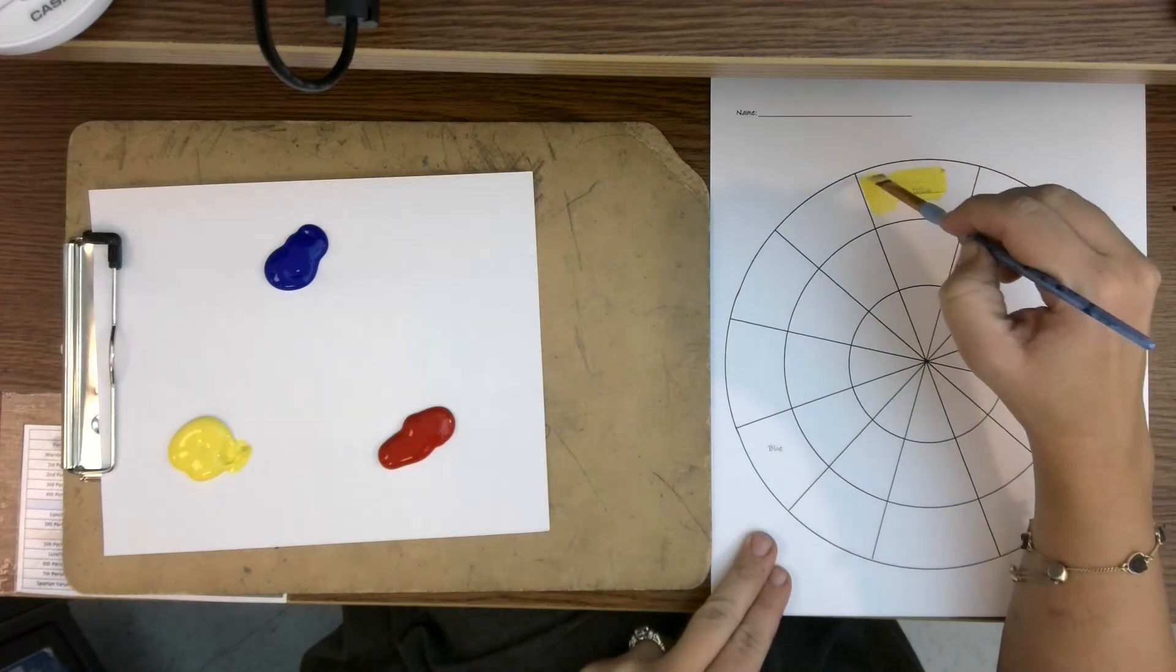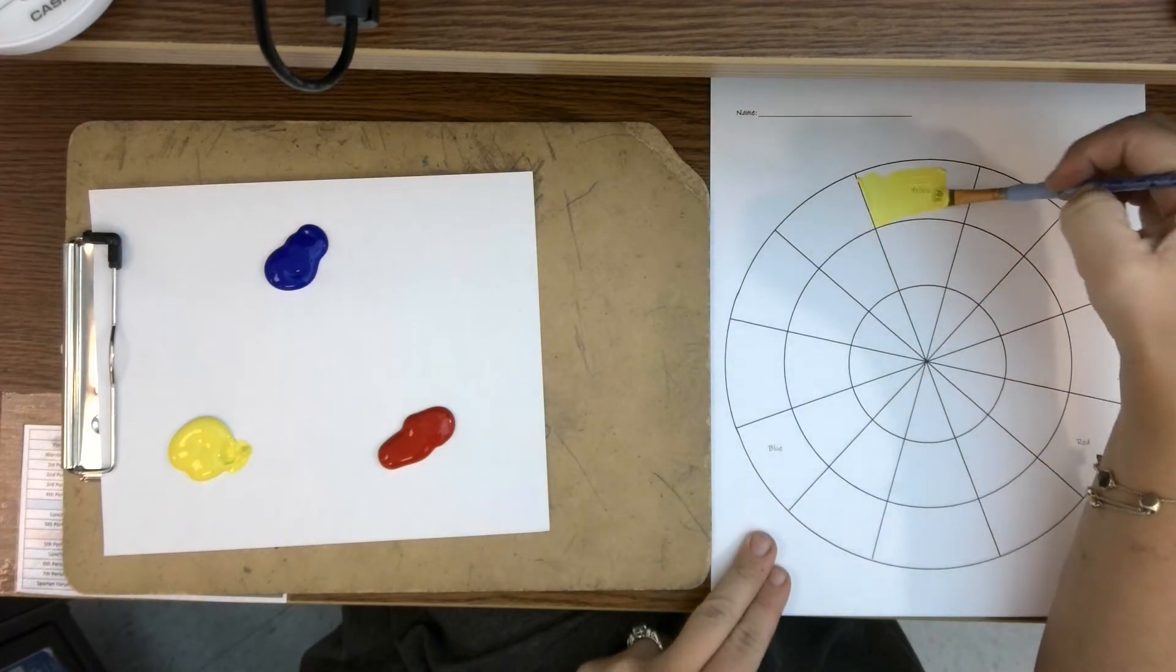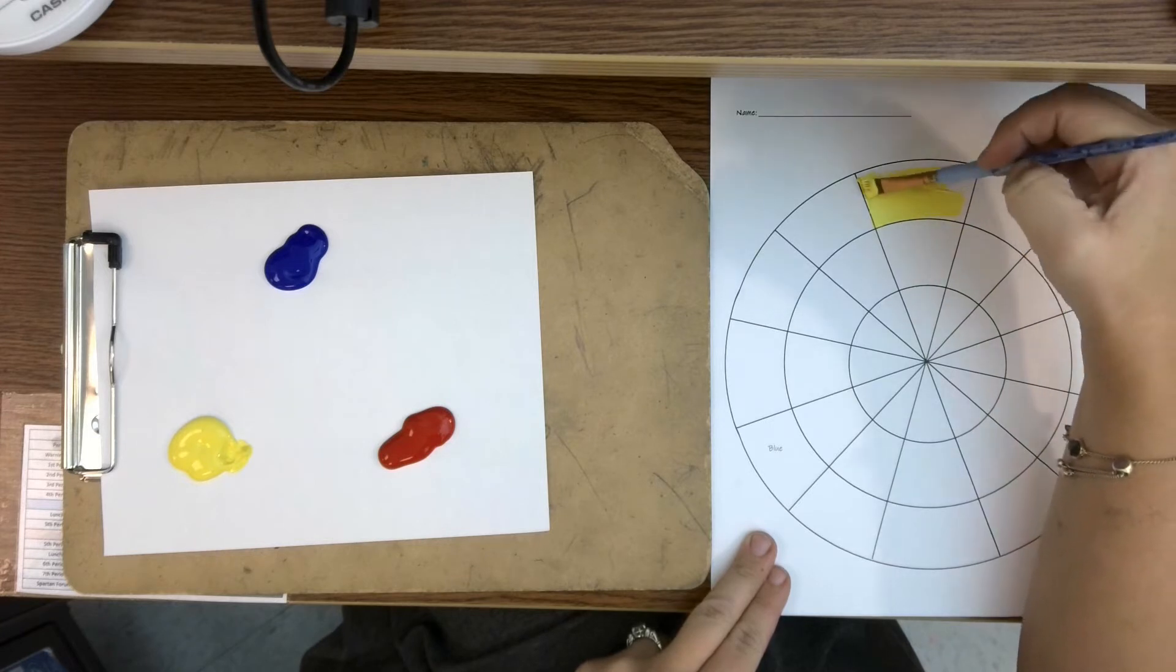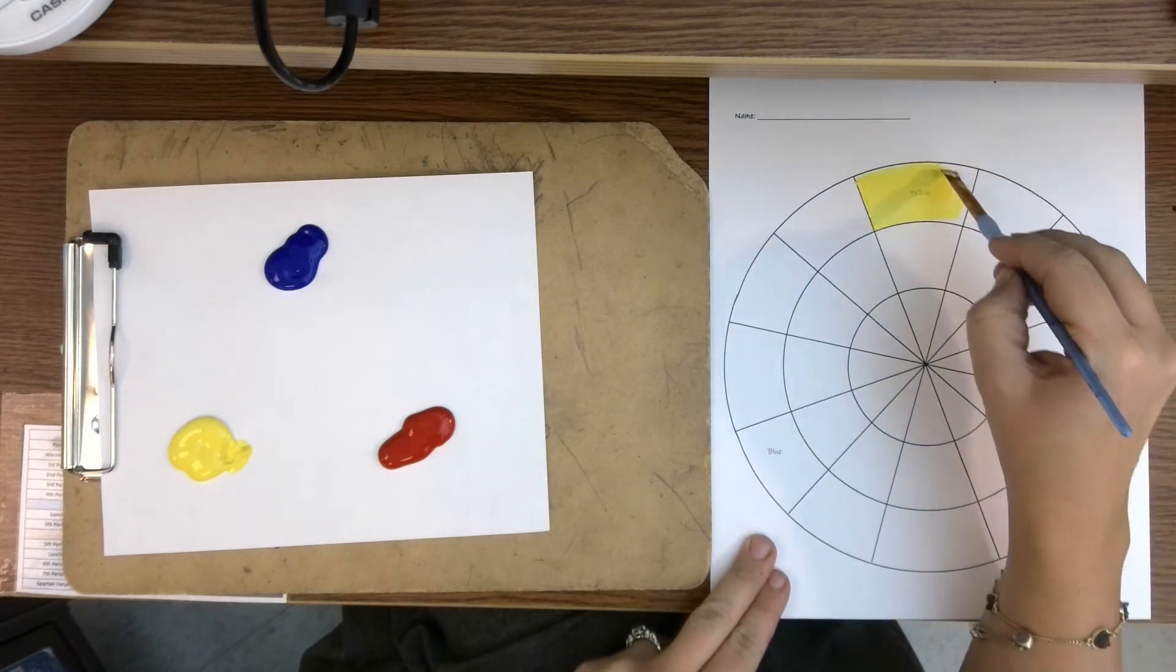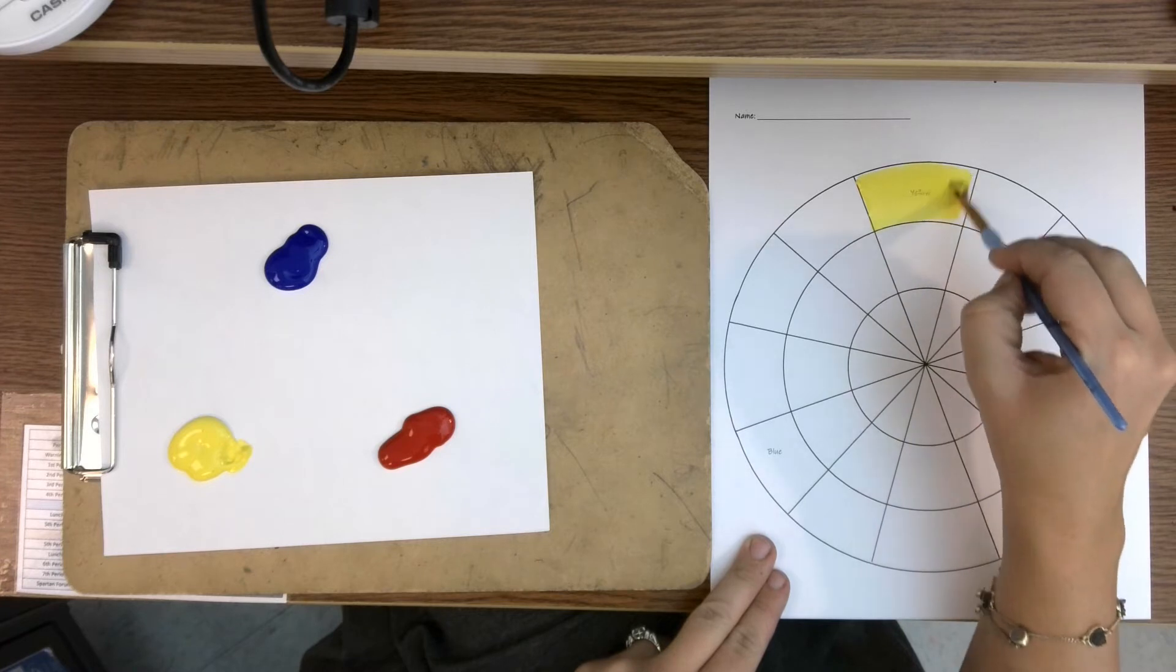That yellow, blue, and red are your primary colors. You mix them together to get the other colors like green and purple and orange. However, with paint,